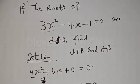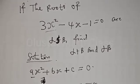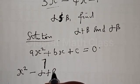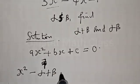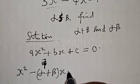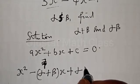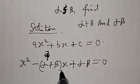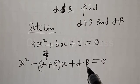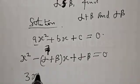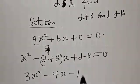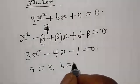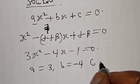We have the quadratic equation in standard form: as² + bs + c = 0, which can also be written as s² - (alpha + beta)s + alpha·beta = 0, where alpha plus beta is the sum of the roots and alpha·beta is the product of the roots. We have 3s² - 4s - 1 = 0, so a = 3, b = -4, and c = -1.